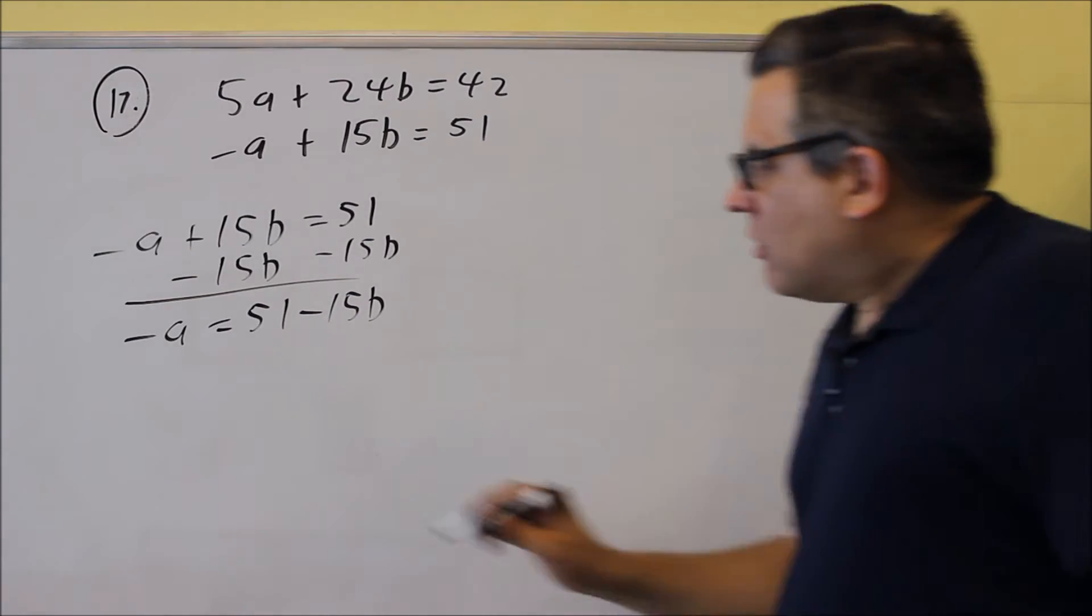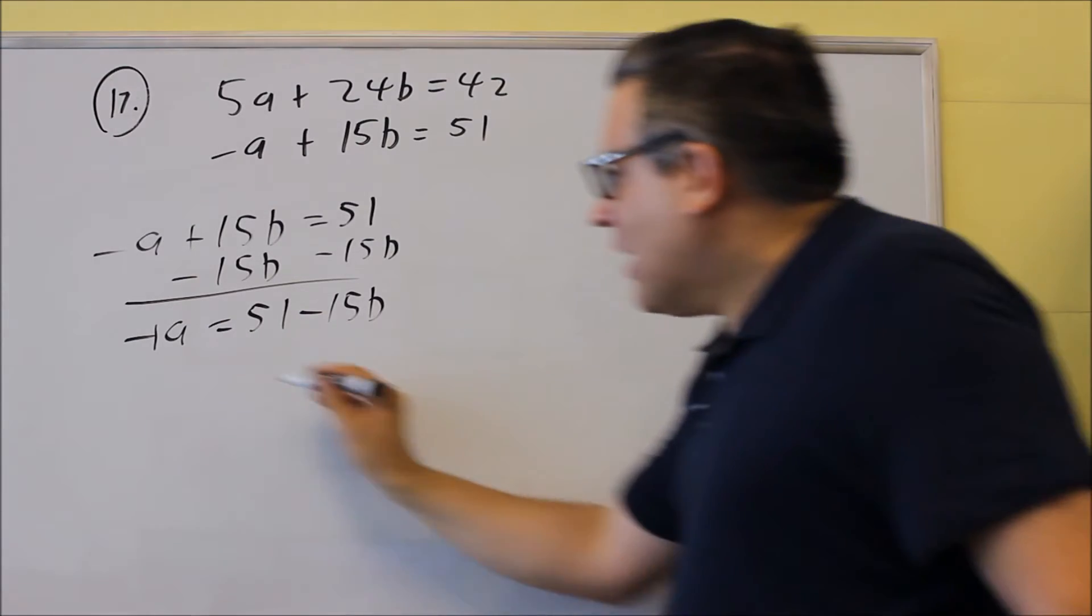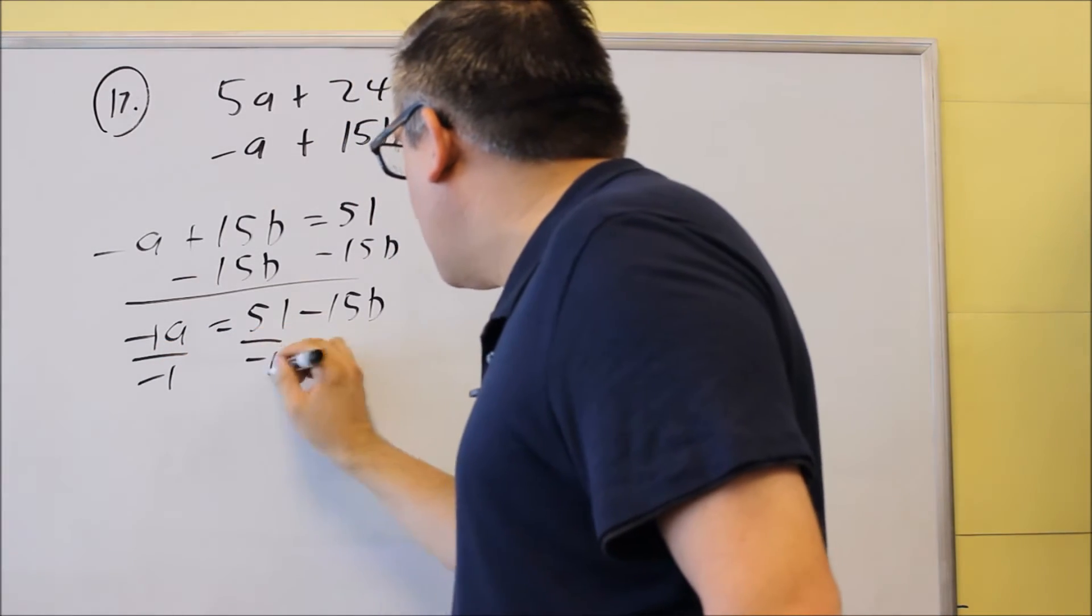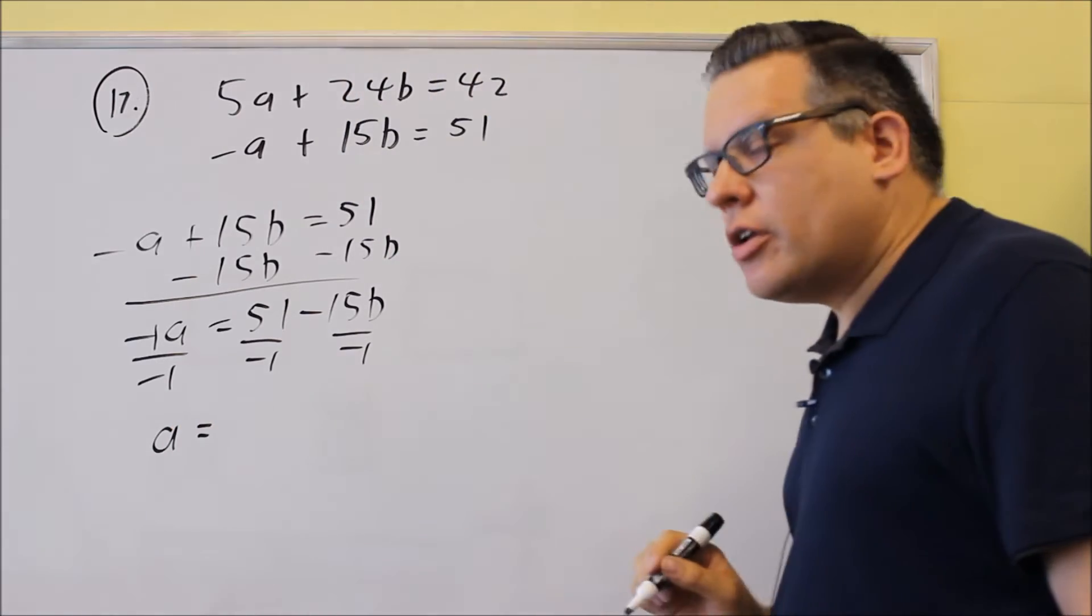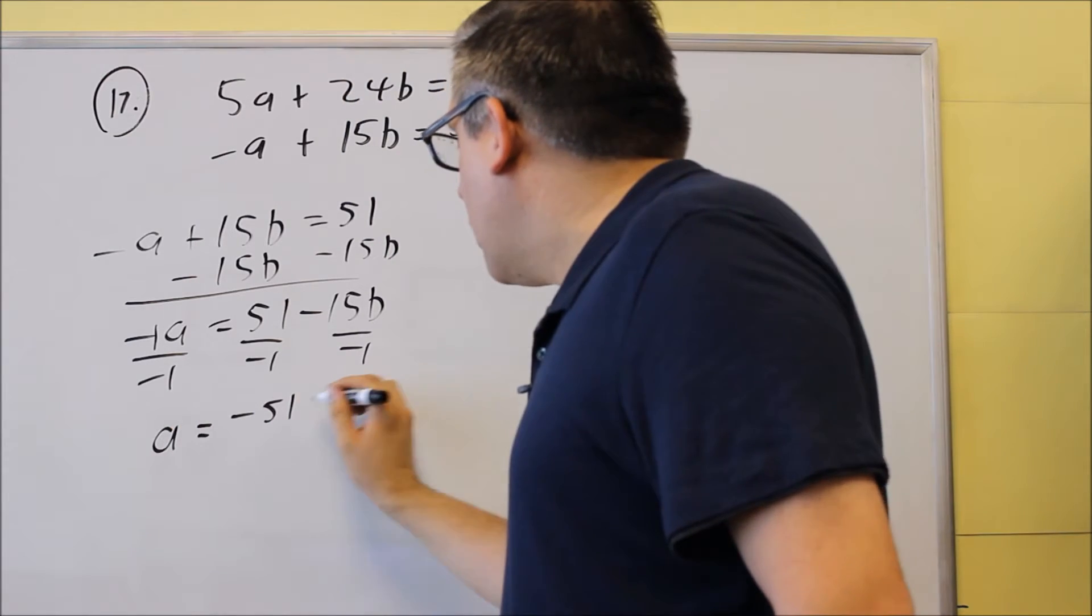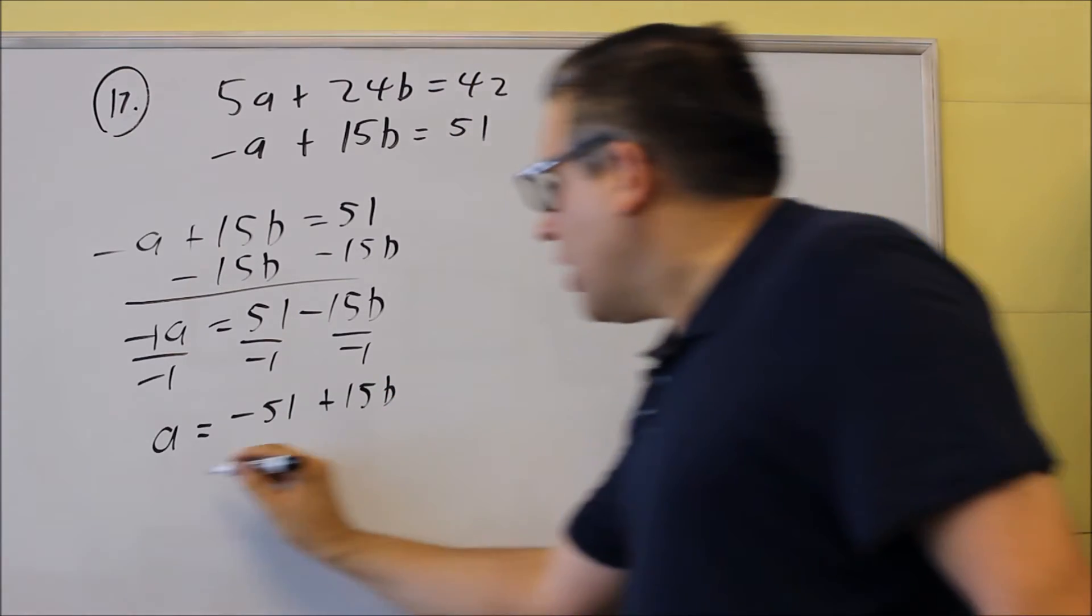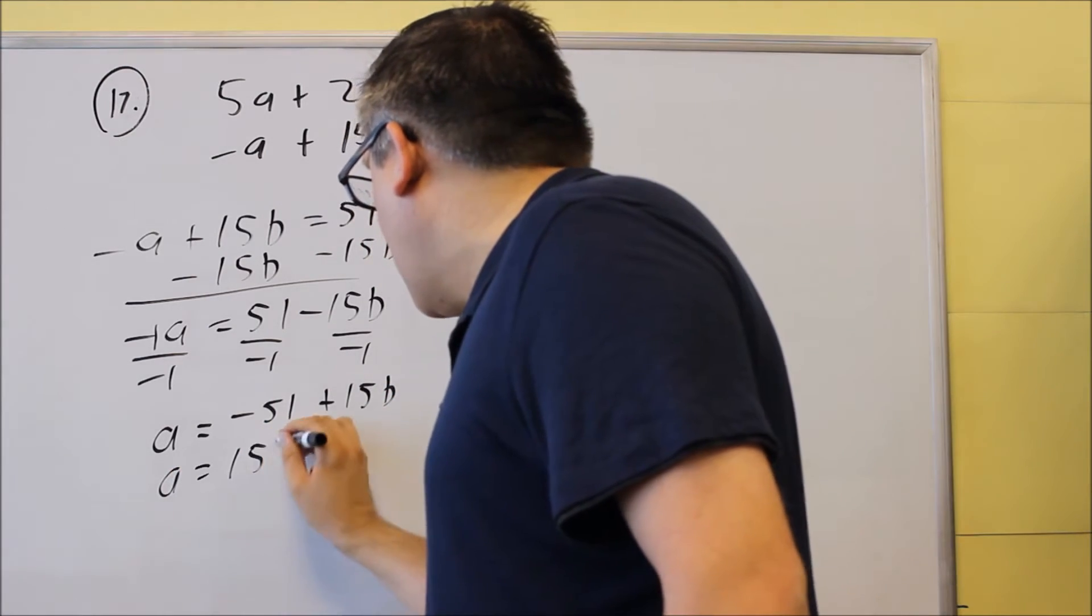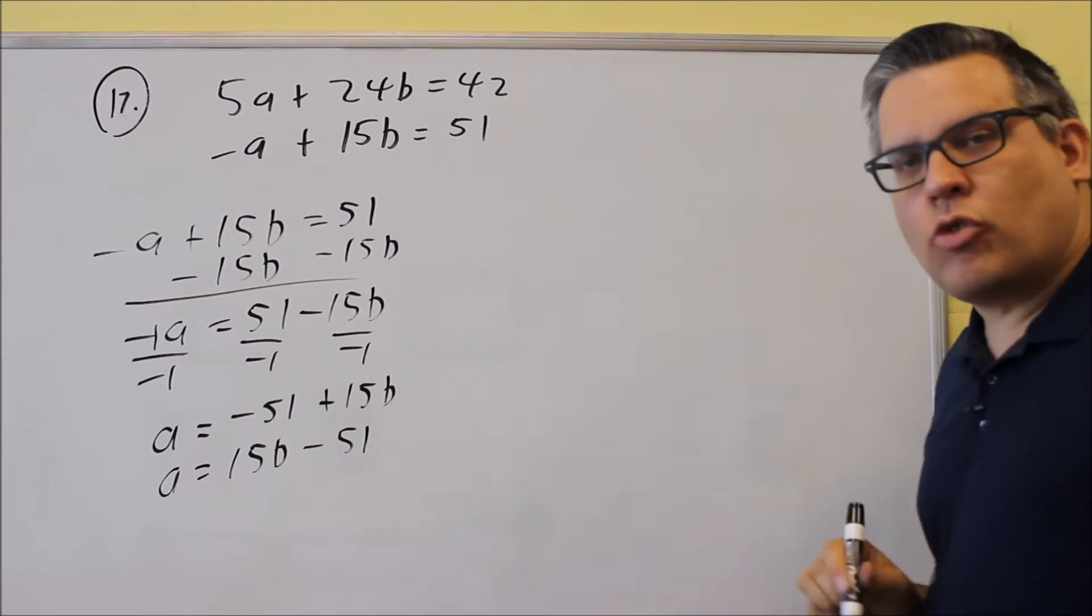Okay, then I'm not done yet because technically there's still a negative one in front of the a. So I'm going to divide both sides by negative one. I get positive a on that one and I get negative 51 plus 15b. And you can keep it that way or if you'd like to switch the order and put the positive number first, that's okay as well, either one would be fine.